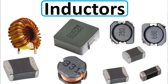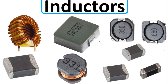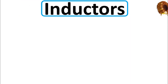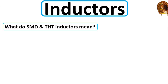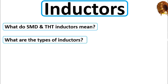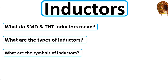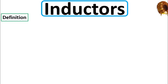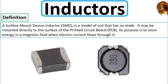I'm going to teach you how to test inductors. We're going to see how to test and check SMT inductors and THT inductors. First, let's answer some questions: What do SMT and THT inductors mean? A surface mount technology inductor (SMT) is a type of coil that has no leads. It may be mounted directly to the surface of the printed circuit board (PCB). Its purpose is to store energy in a magnetic field when electric current flows through it.